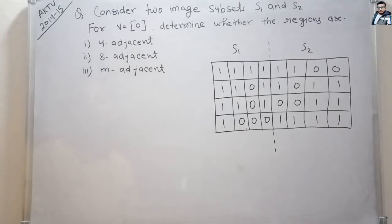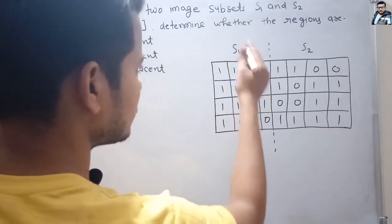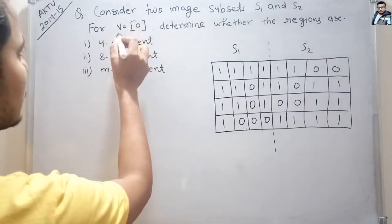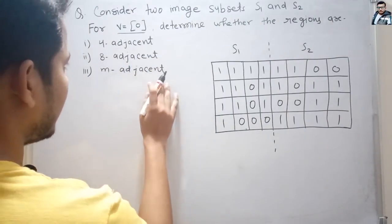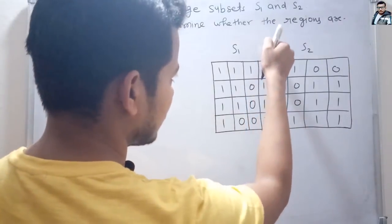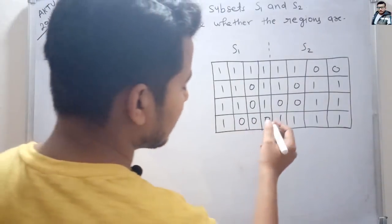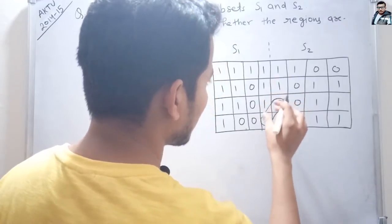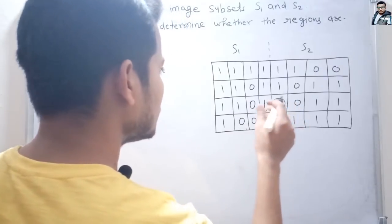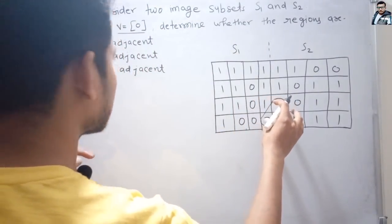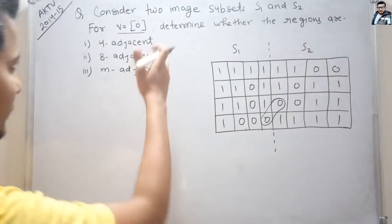Let's solve this question that was asked in GATE 2014-15. The question is: consider two image subsets S1 and S2 — this is the first subset and this is the second subset. For V equal to 0, determine whether the regions are 4-adjacent, 8-adjacent, and M-adjacent. Here is the boundary between S1 and S2, and since V equals 0, we only consider pixels with gray level 0.